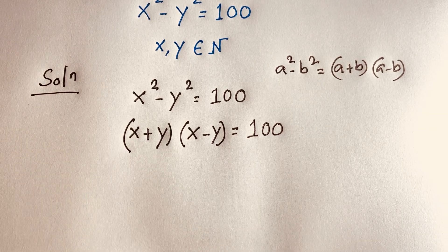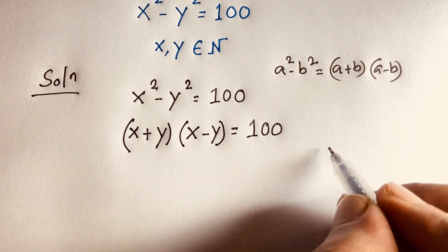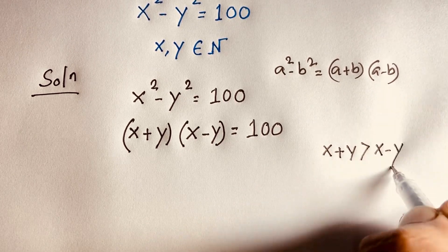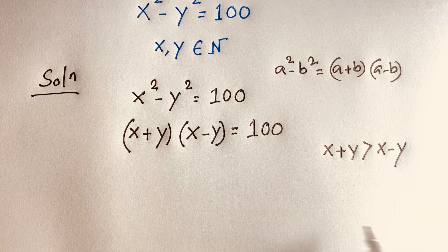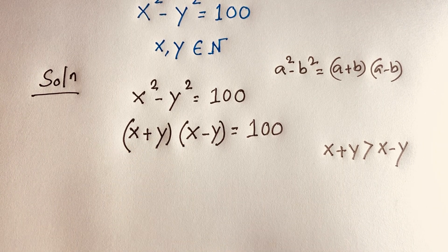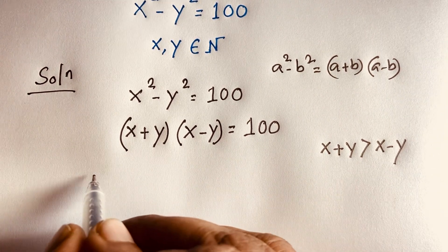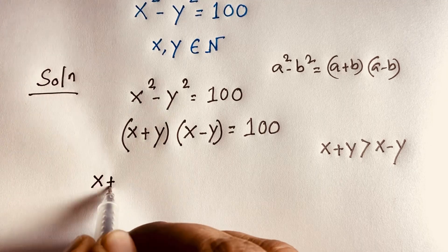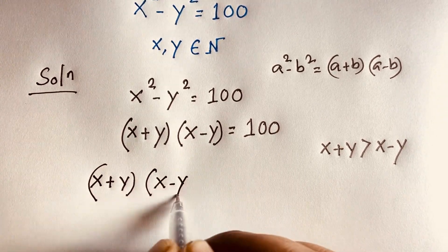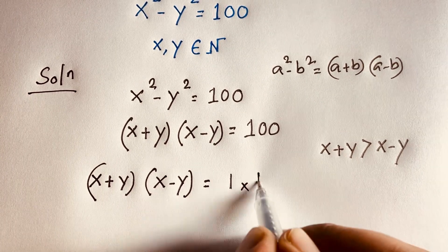Now, in this expression, you can see that x plus y is always greater than x minus y. We'll find the factor pairs of 100. So x plus y times x minus y equals 100, which we can write as 1 times 100.